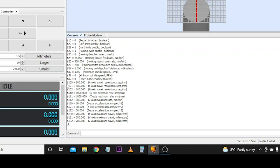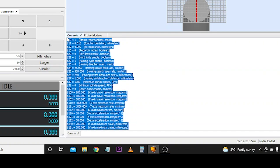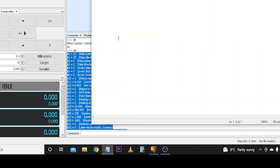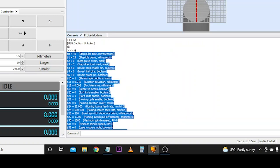I'll type $$ and hit enter to refresh the settings. The settings we'll be focusing on today are $100 through to $102. It says travel resolution steps per millimeter. The most important thing before starting a process like this is take a copy of all your settings. We'll scroll up, highlight everything, press Ctrl+C, come over to notepad, press Ctrl+V. Now we have a backup of all our default settings.